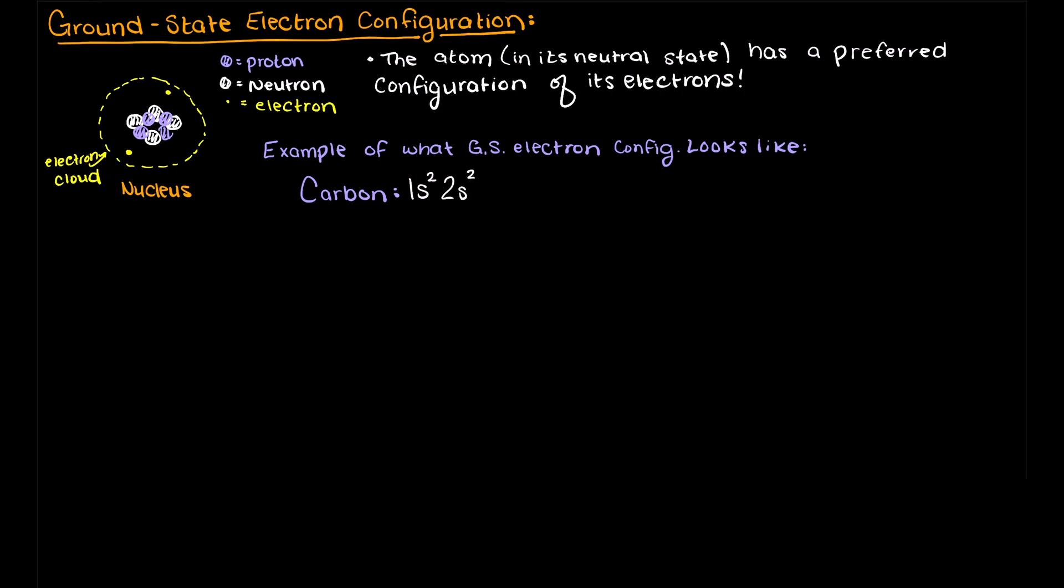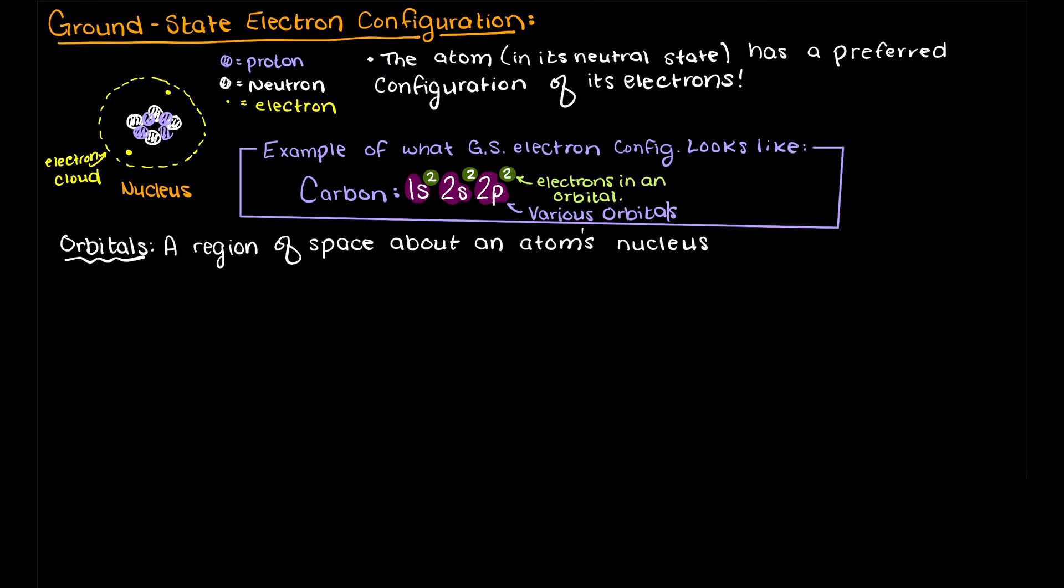Then in the next video we'll expand this topic to molecules and ions as well. As we learned about in the previous video, in which we performed a review of the atomic structure, atoms have an ideal configuration of their surrounding electrons.